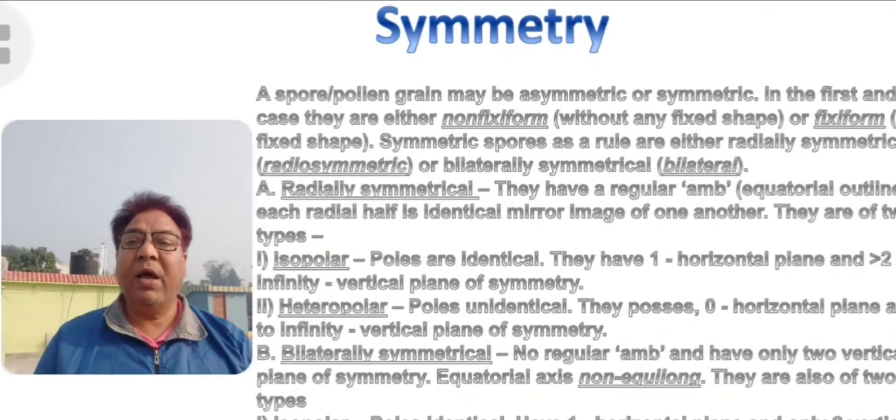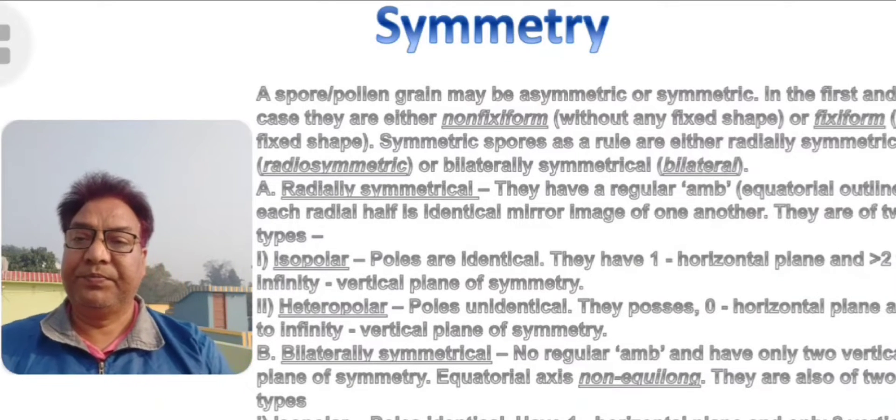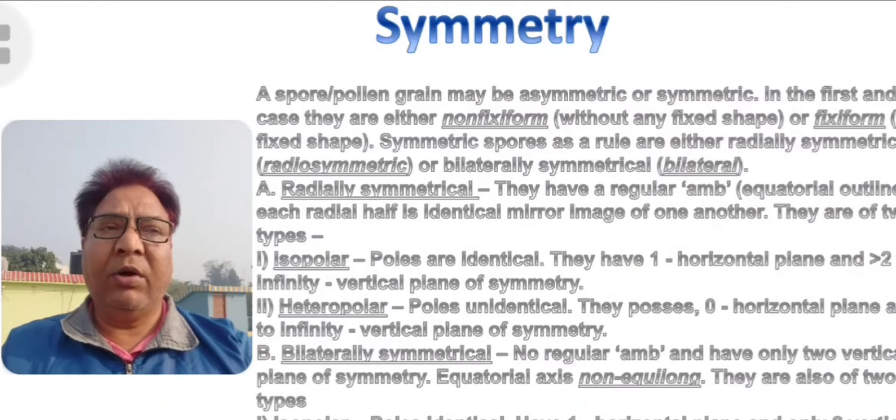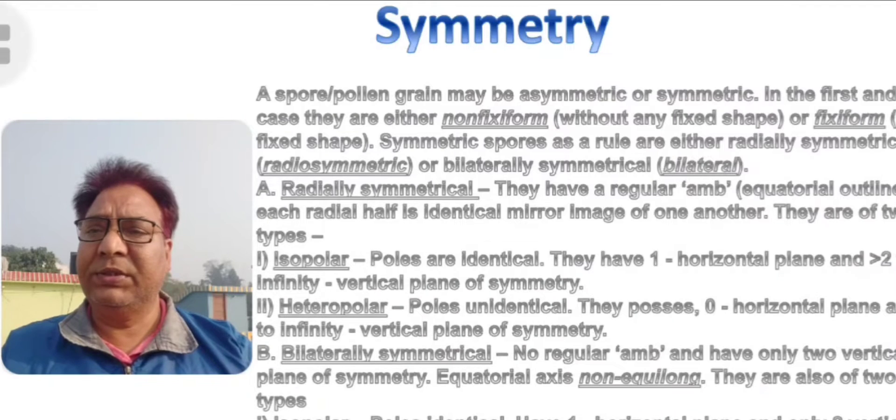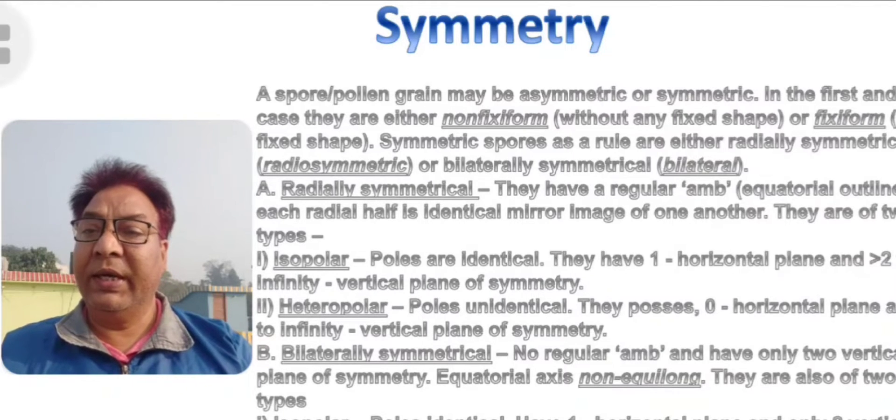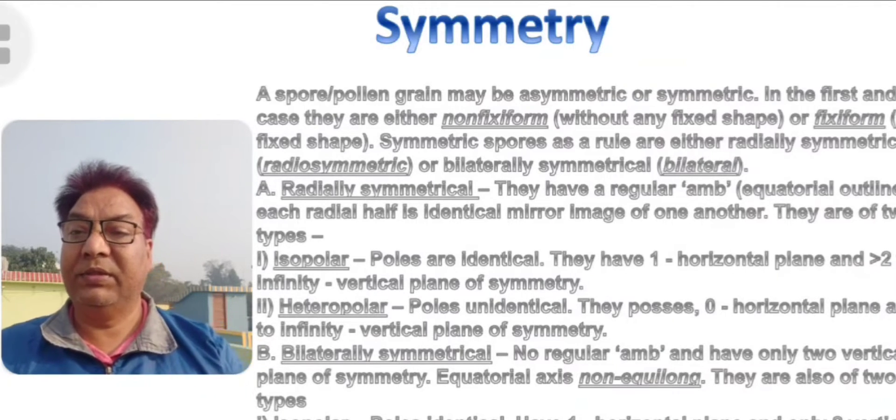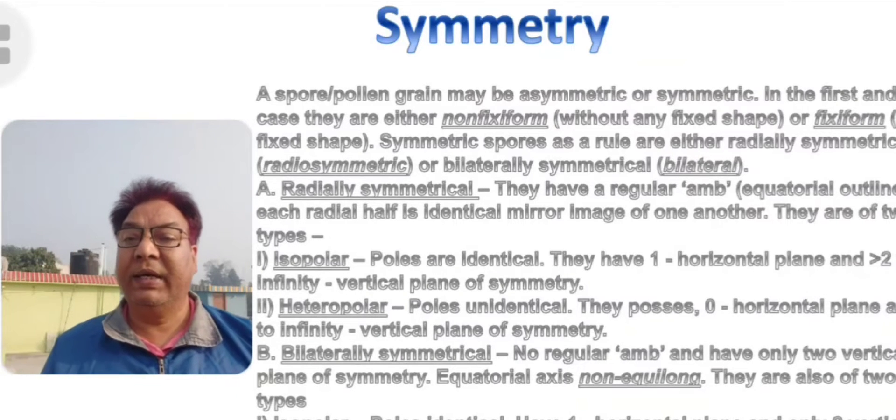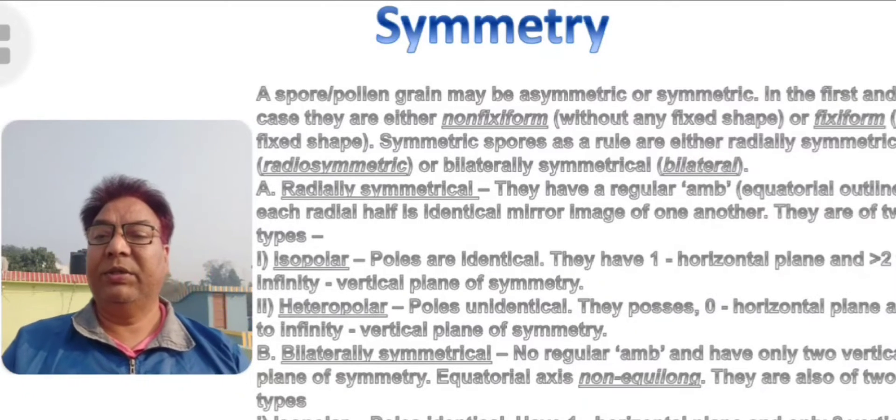Now talking about symmetry. In all biological systems, we know that there are two types of symmetries: radial symmetry and bilateral symmetry. Spores will also have radial symmetry and bilateral symmetry.